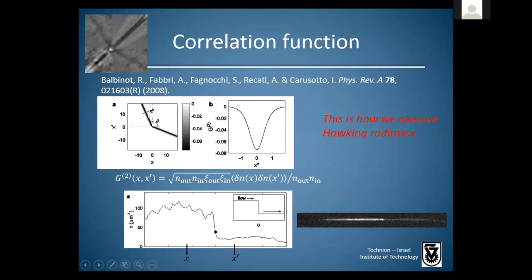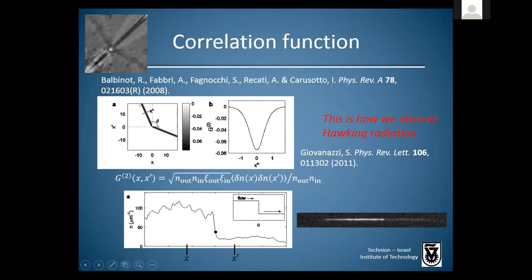Furthermore, these correlations are negative correlations, and from the literature we understand that negative correlations imply positive mutual information between the inside and outside of the analog black hole. We compute the correlation function by observing many thousands of repetitions of the experiment, and look for these bands.